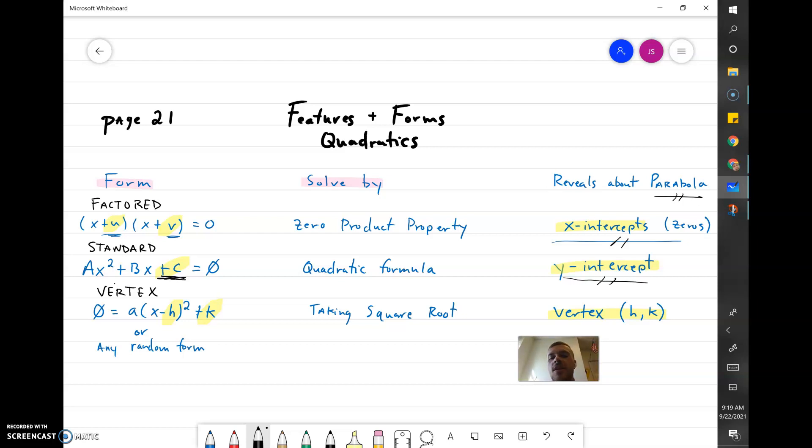In vertex form, obviously what does it quickly reveal about the parabola? It quickly reveals the vertex. We just have to look to see what the h value is, that's the x value of our vertex, and the k value would be the coordinate point for the y value of our vertex.